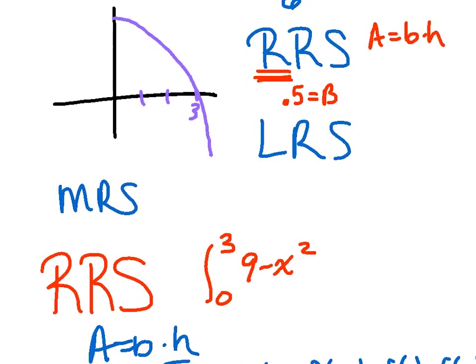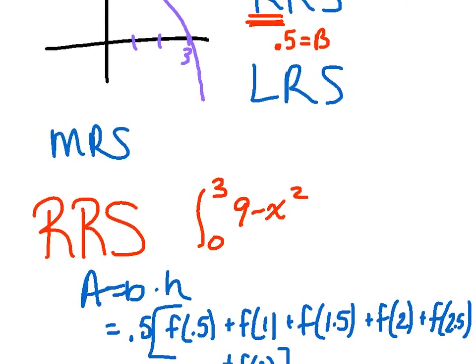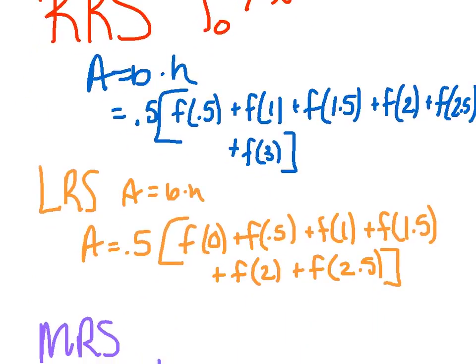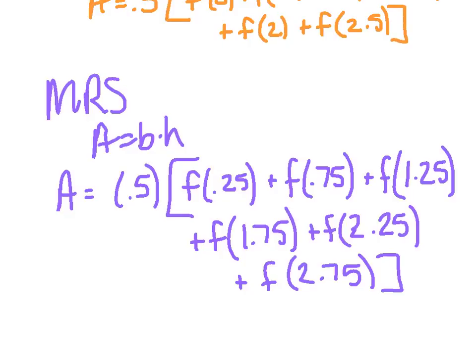For the right-hand Riemann sum: base times height, base of 0.5. Since I'm starting on the right, I don't use the lower bound — I start at 0.5: f of 0.5, f of 1, f of 1.5, f of 2, f of 2.5, and f of 3, ending on the upper bound. For the left-hand Riemann sum: starting on the lower bound — f of 0, f of 0.5, f of 1, f of 1.5, f of 2, and f of 2.5. Six sub-intervals means six terms. For the midpoint: midpoints between each pair — 0.25, 0.75, 1.25, 1.75, 2.25, 2.75.